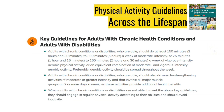Key guidelines for adults with chronic conditions and adults with disabilities: those who are able should do at least 150 to 300 minutes a week of moderate intensity, or 75 to 150 minutes a week of vigorous intensity aerobic physical activity, or a combination of both, preferably spread throughout the week. They should also do muscle strengthening activities of moderate or greater intensity involving all major muscle groups on two or more days a week. When adults with chronic conditions or disabilities are not able to meet the guidelines, they should engage in regular physical activity according to their abilities and avoid inactivity.